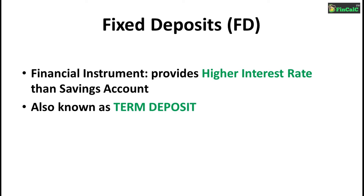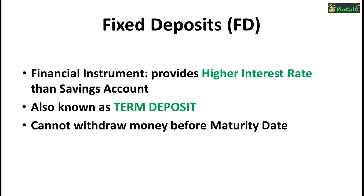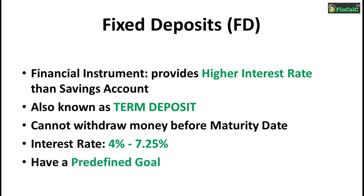Unlike recurring deposit which we have seen in the last video, the money cannot be withdrawn from a fixed deposit before the maturity date. The interest rate of fixed deposits varies from 4% to 7.25%. The important point to note is that you should have a clear long-term goal before you save your hard earned money in a fixed deposit, as it will yield guaranteed interest money apart from the principal amount you have invested.